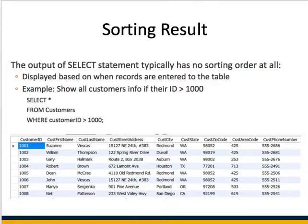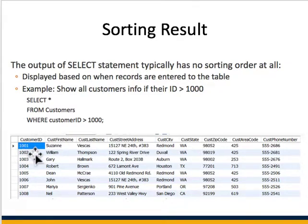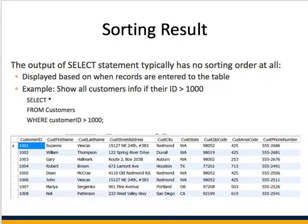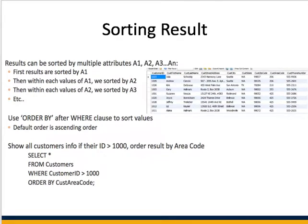For example, when you run a query like SELECT all from a customer table with some condition, you can get results in a random order. Although the customer IDs currently appear sequential, that may not necessarily be the case every time. But if we want to sort results by some other attribute — say, by area code instead of customer IDs — how do we do that?